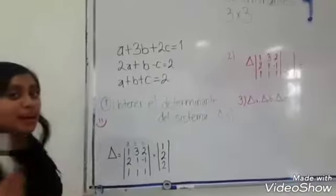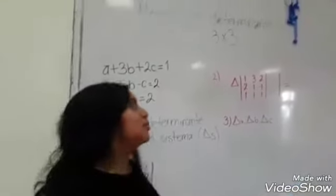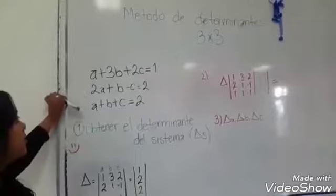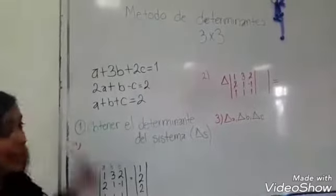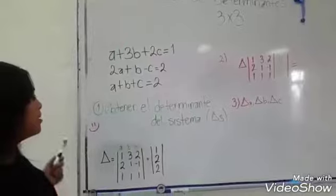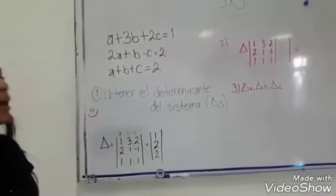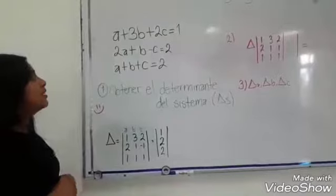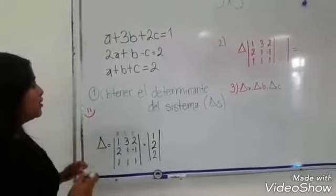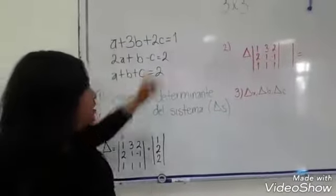A mí me tocó explicar el método 2, que es el método de determinantes de 3x3. Se dice 3x3 porque tenemos 3 ecuaciones lineales y 3 incógnitas. El primer paso es obtener el determinante del sistema, para lo cual necesitamos contemplar solamente los números que contienen la variable A, B y C.